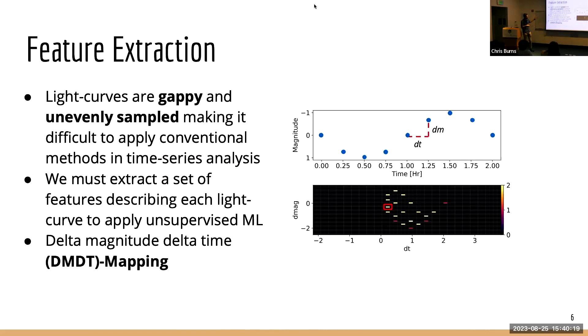So let's talk about why we even need to do this feature extraction. Well, light curves are very gappy and unevenly sampled from ground based observatories. So applying conventional methods of time series analysis from other fields is very difficult with these particular light curves. We need to extract a set of features just to describe them. The approach we do is we take, given a light curve, we take every combination of points on our light curve, we find the difference in time and the difference in magnitude, and we bin these values onto a 2D histogram. This 2D histogram is a delta magnitude delta time map, which we'll refer to as our DMDT map from here on.